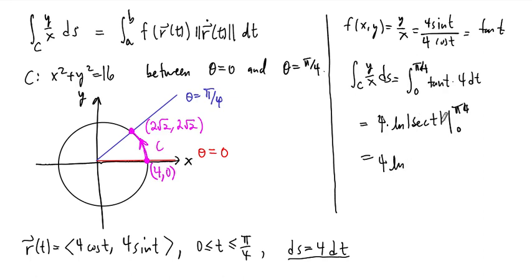And then this is 4 times [natural log of secant of pi over 4, which is √2, minus secant of 0, which is 1]. So this is 4 natural log of √2 minus natural log of 1. And this whole thing becomes natural log of (√2)^4, and that's just natural log of 4. So the path integral of this function along this path is the natural log of 4.